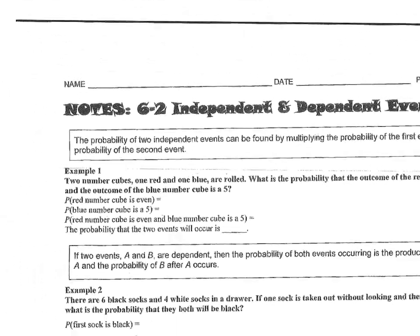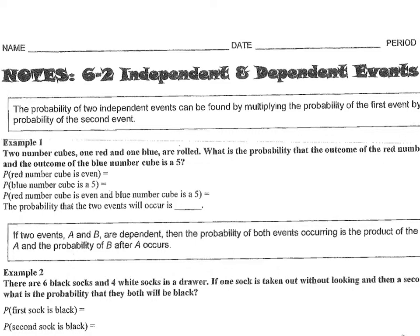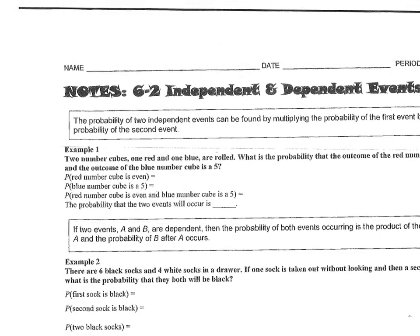Independent events happen independently from each other. For example, if we roll a dice and choose from a deck of cards, those are two different events that have nothing to do with each other. Dependent means that one event depends on the other. Like yesterday, we had a bowl of tickets, and every time we took a ticket out, the total number of tickets decreased — that's dependent.